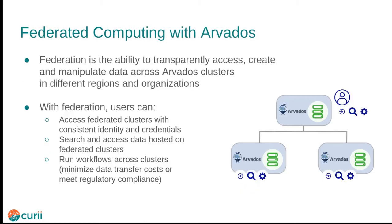A major feature of Arvados is federation. Arvados clusters are able to communicate with other clusters in a federation in order to enable the user to log in with a consistent identity and credentials, and search and access data across multiple clusters in different regions or organizations. Federation enables you to use Arvados to create a data commons in which data can be both shared widely among users in an organization or between organizations, while still having controlled, audited access.